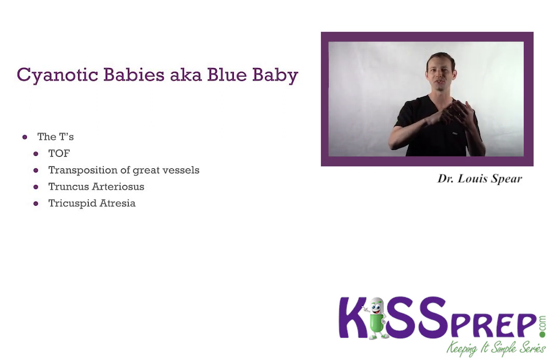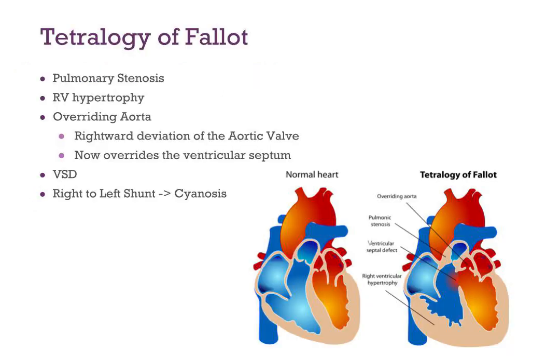Tetralogy of Fallot has four components you must know: pulmonary stenosis, right ventricular hypertrophy, overriding aorta — basically due to a rightward deviation of the aortic valve that now overrides the ventricular septum — and ventricular septal defect (VSD). If the VSD hole is small, the sound is loud. You'll hear a holosystolic murmur at the left sternal border.